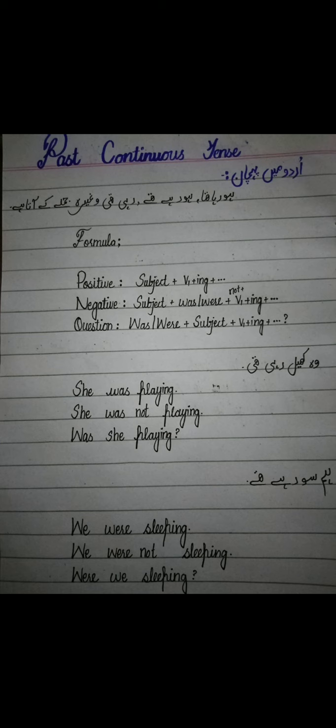Positive sentence will always be simple and this is the tense we commonly use to communicate with each other. Negative sentence میں یہ ہوگا کہ جو بھی جملہ آپ نے بنایا ہوگا اس میں ہمیشہ نہیں کا استعمال ہوگا یا not کا use ہوگا — انگلیش میں وہ negative sentence ہوگا۔ اور question sentence وہ ہوتا ہے جس میں ہم سوال کر رہے ہوں۔